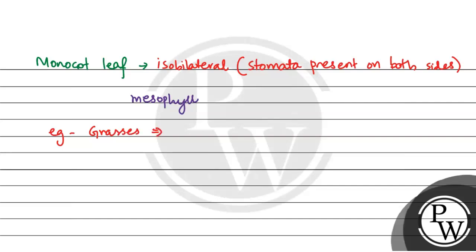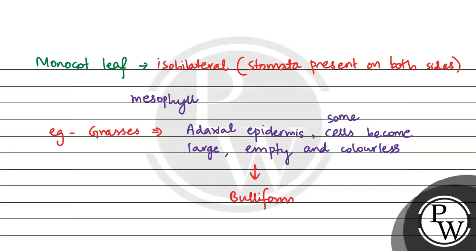In grasses, the adaxial epidermis has some cells which become large, empty and colourless. These are called buliform cells.